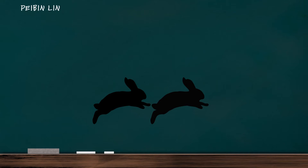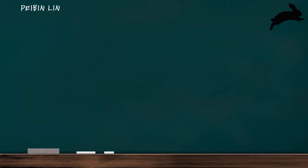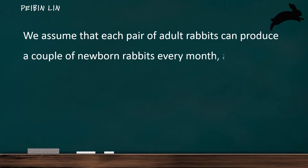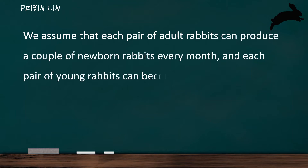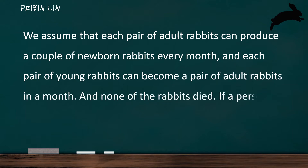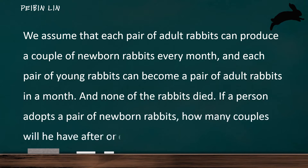Today, I want to test you with a math problem. The name of this problem is called the growth of rabbit populations. Let's look at the problem first. We assume that each pair of adult rabbits can produce a couple of newborn rabbits every month, and each pair of young rabbits can become a pair of adult rabbits in a month. And none of the rabbits died. If a person adopts a pair of newborn rabbits, how many couples will he have after one year?